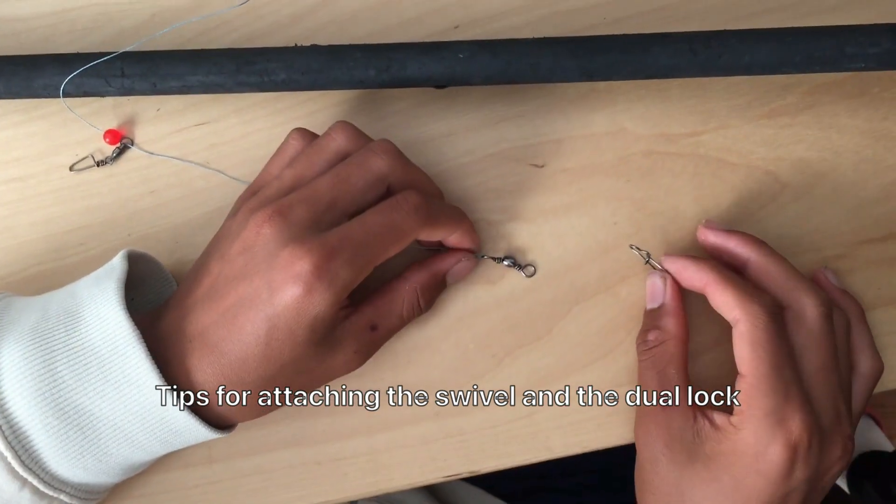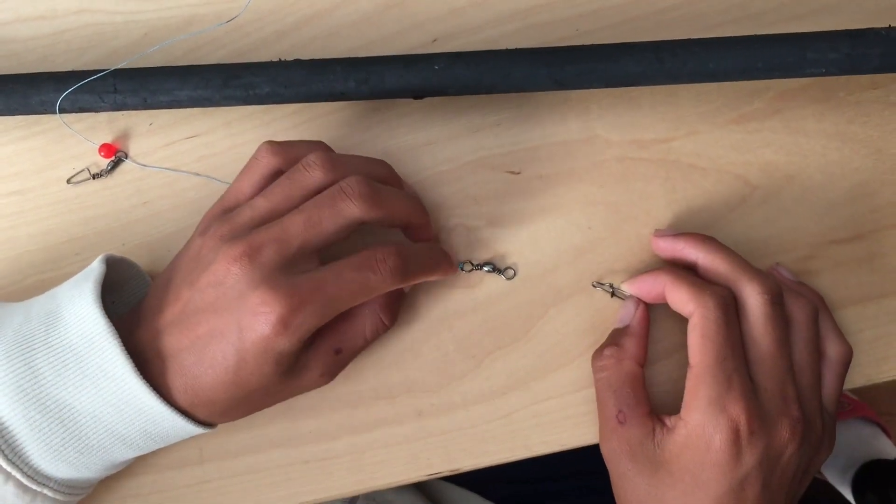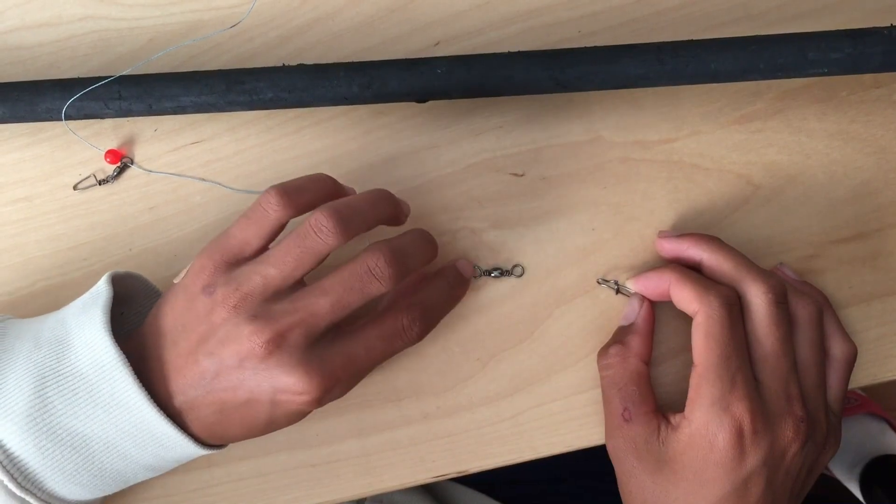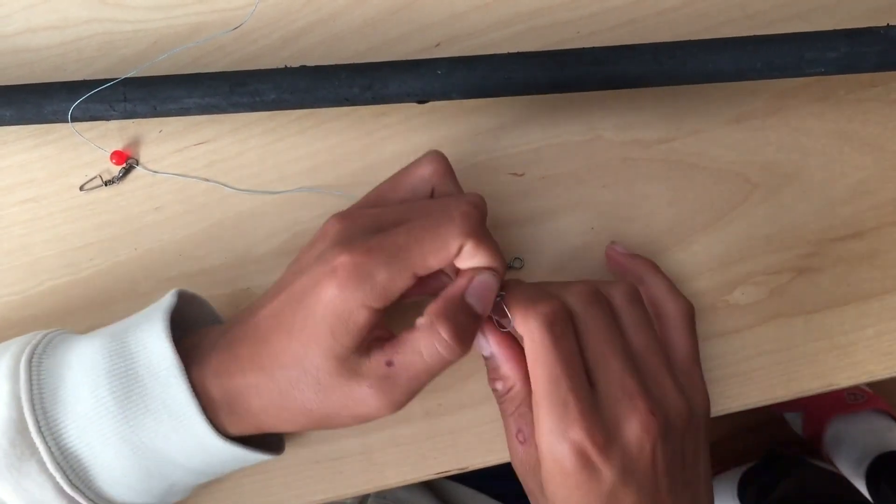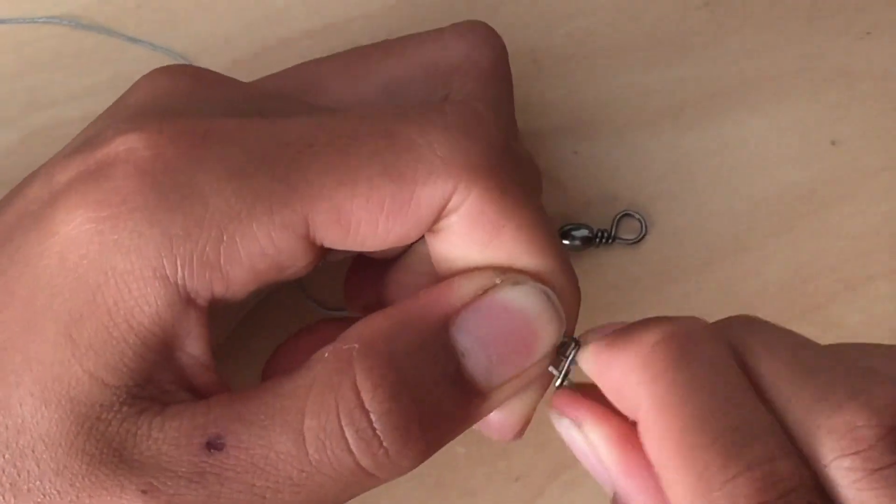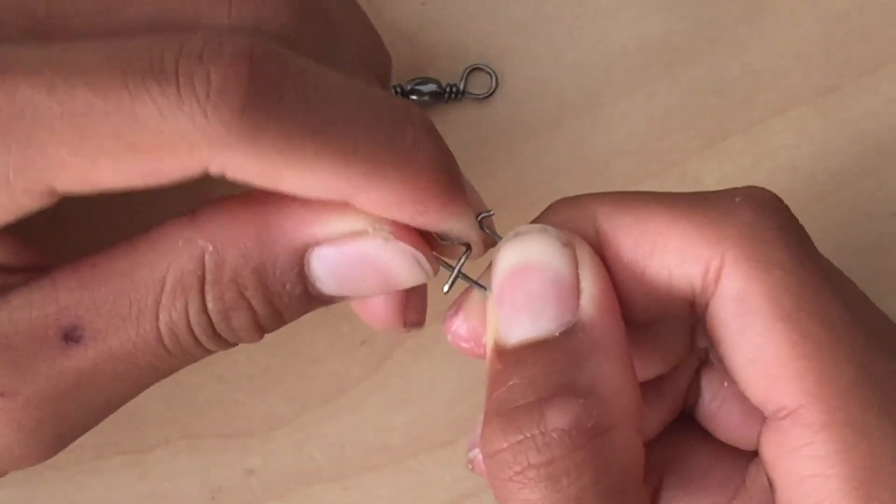For people who have two separate pieces for the main swivel, a barrel swivel and a door lock, you would first clip this open, like right here. One, and then two. This side.